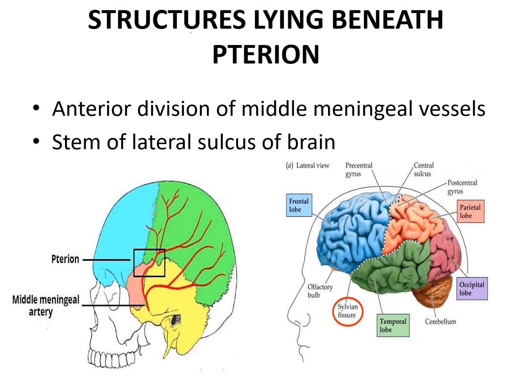Let us see the structures lying beneath the Pterion. First, you have the anterior division of the middle meningeal artery — you can see here this is the middle meningeal artery, and its anterior division lies beneath the Pterion. You also have the stem of the lateral sulcus of the brain, which is also beneath the Pterion.